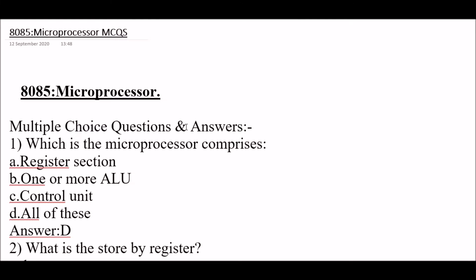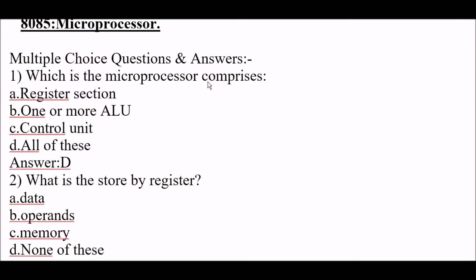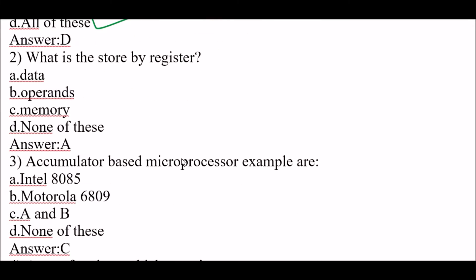The first question: which does a microprocessor comprise? Option A: register section. Option B: one or more ALU. Option C: control unit. Option D: all of these. The right answer is option D, all of these. A microprocessor comprises a register section, one or more ALUs (arithmetic logic units), and a control unit.